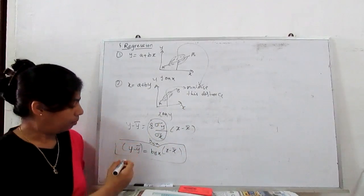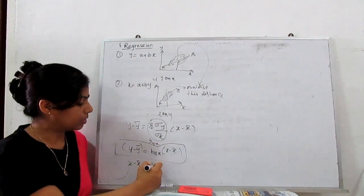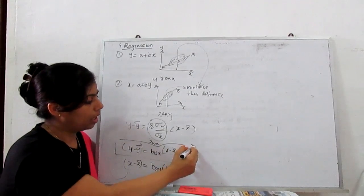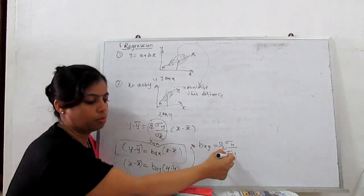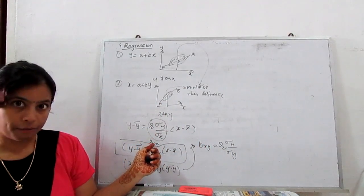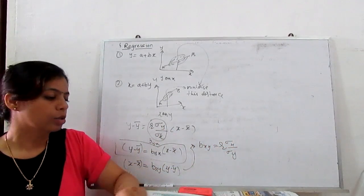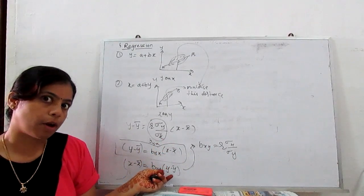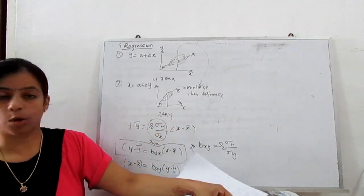The regression line for x on y is: x − x̄ = b_xy (y − ȳ), where b_xy = r·(σ_x / σ_y). Note that b_xy is the reverse of b_yx — sigma x is on top and sigma y is on the bottom. This gives us our two regression lines: one for y on x and one for x on y.